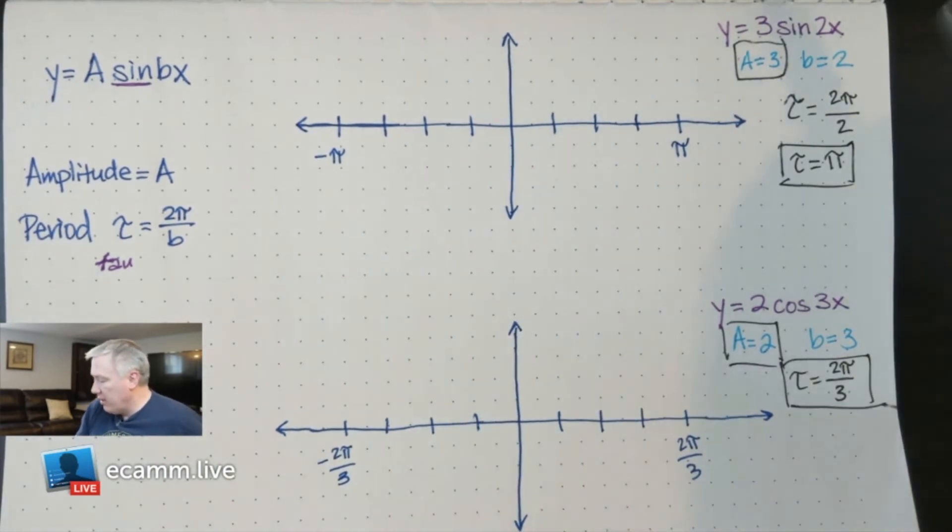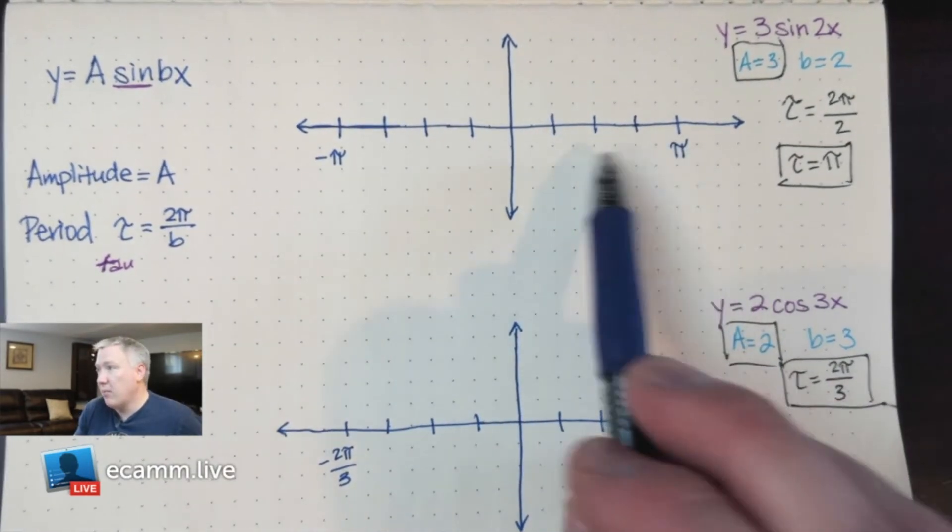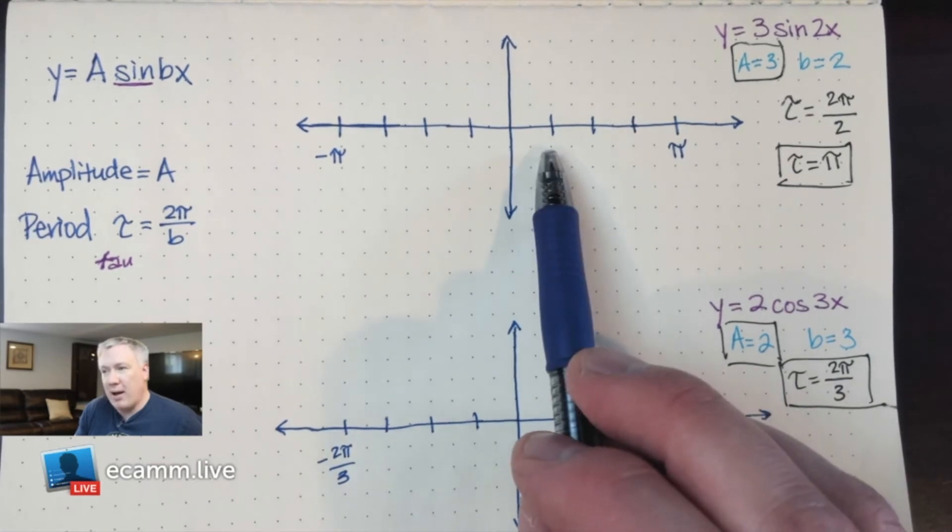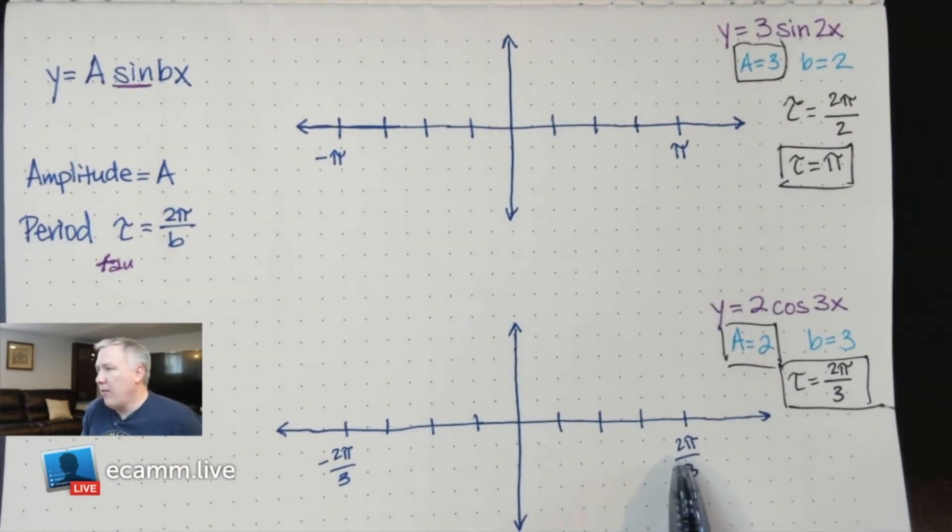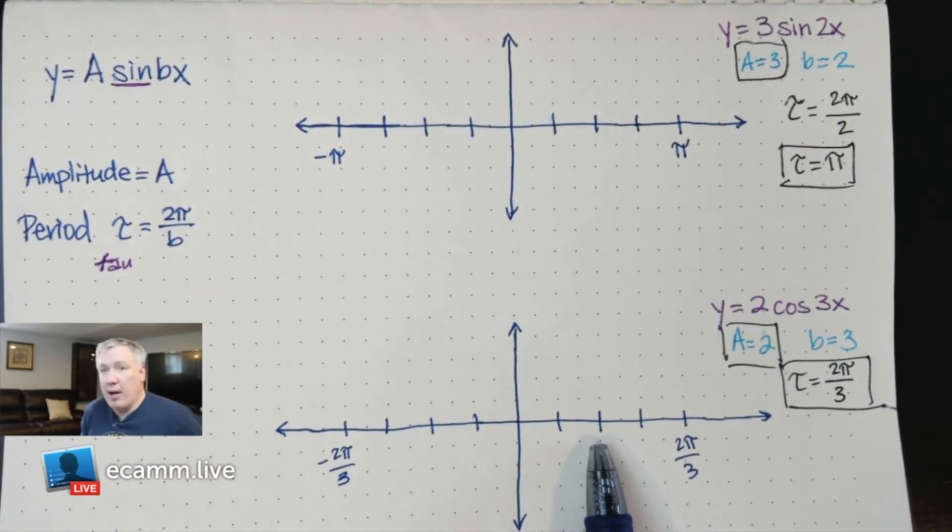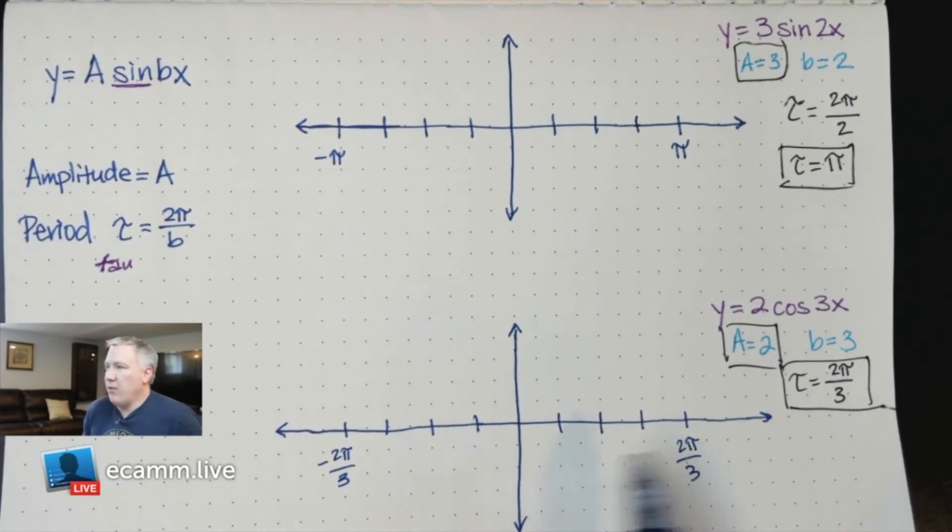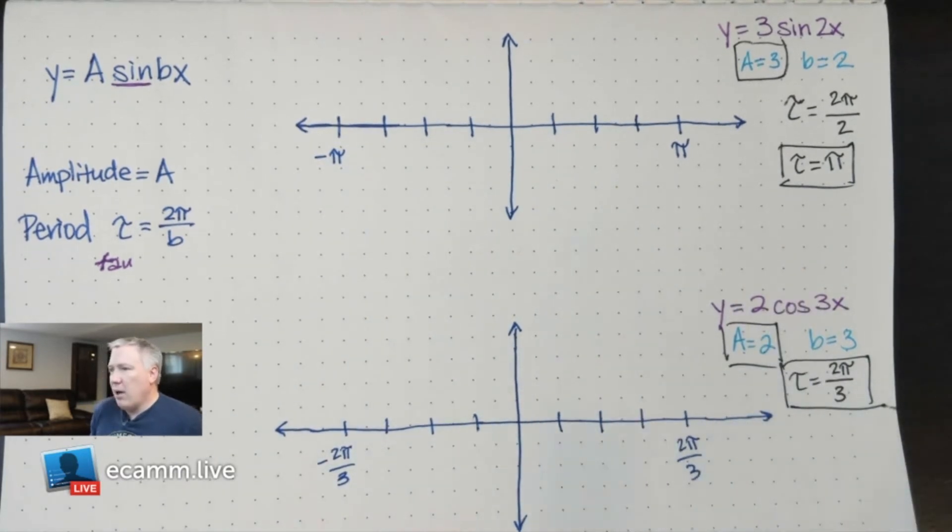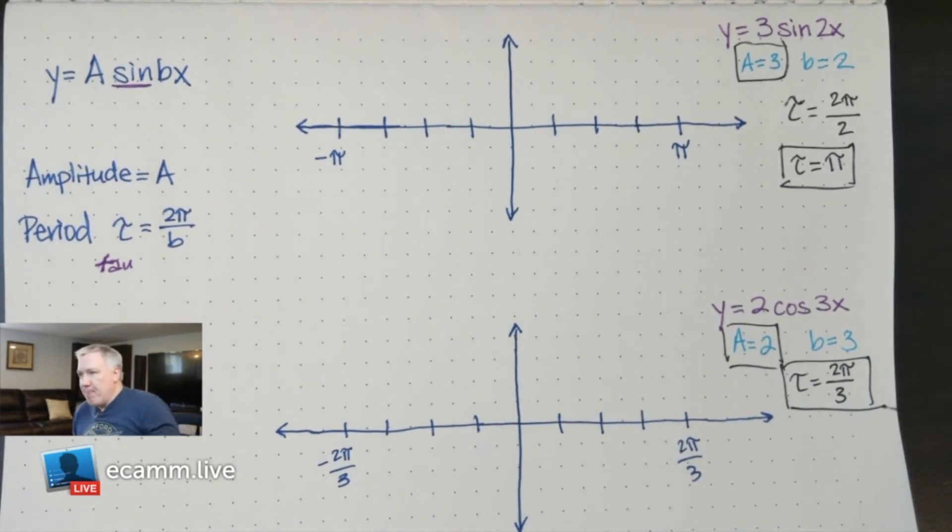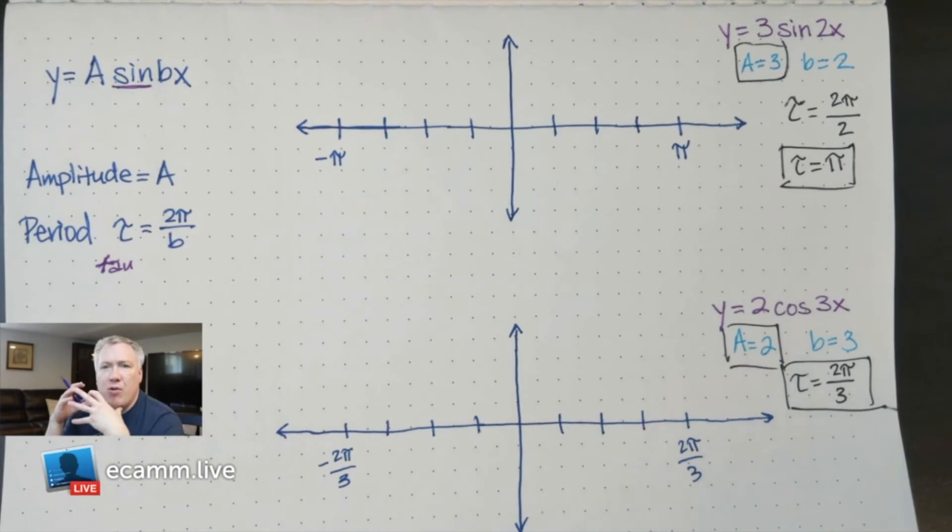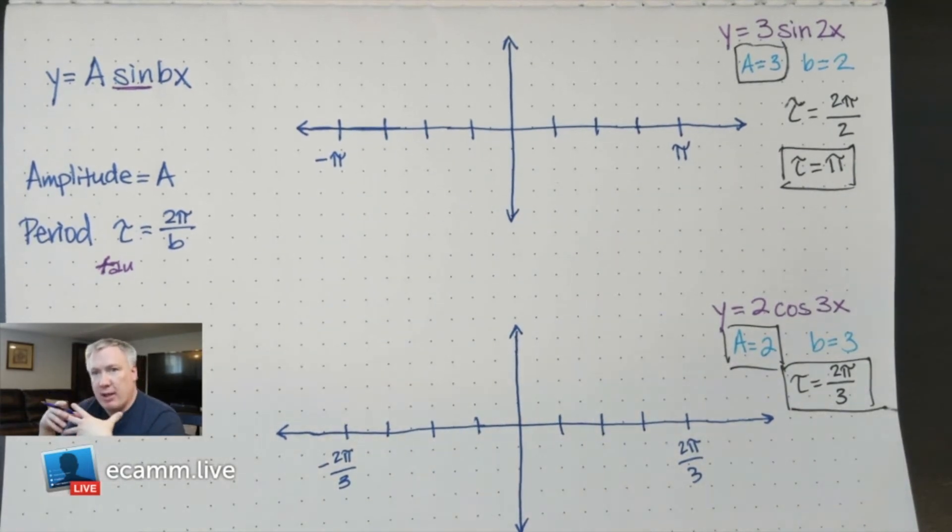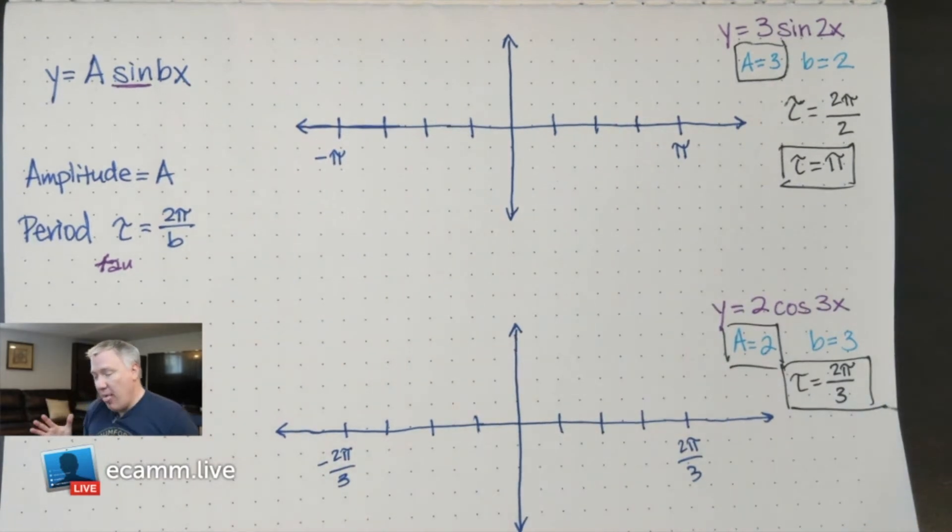That means that this one here is halfway, so this would be π/2, which would make this one π/4. Likewise, halfway here would be π/3. We don't need to identify all the marks, but that's what's happening. Here's what's nice about it: if you split up the period into four sections, that makes it really easy to graph.